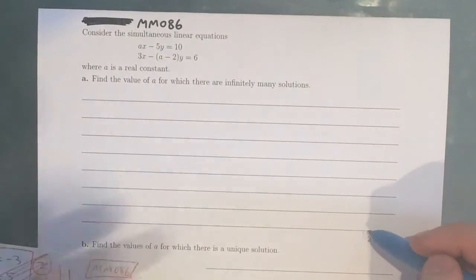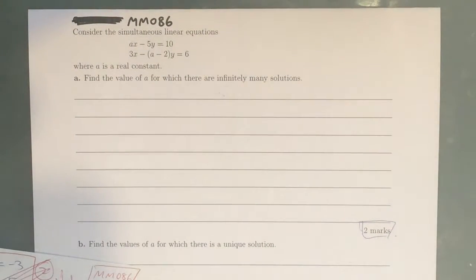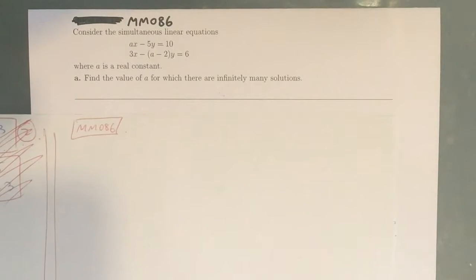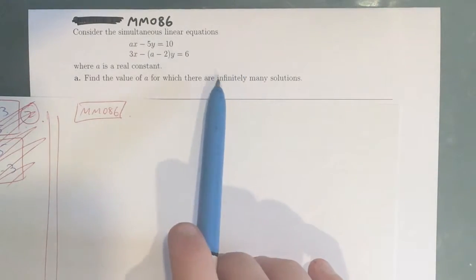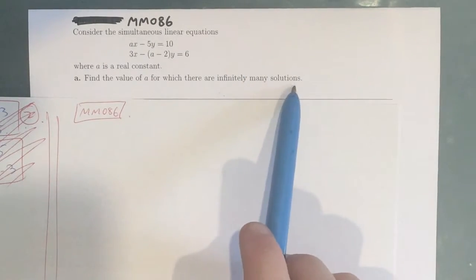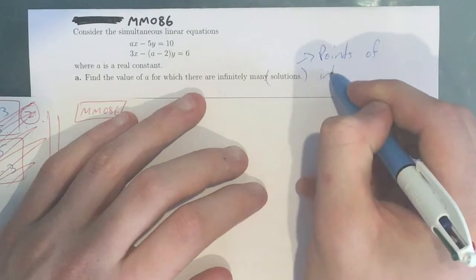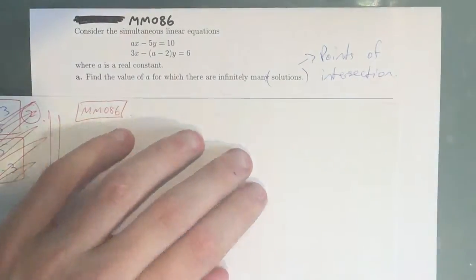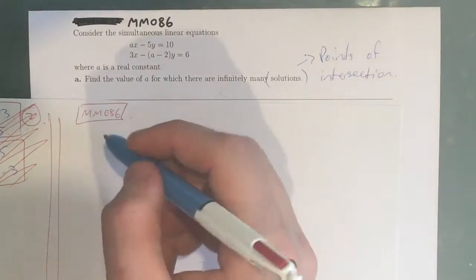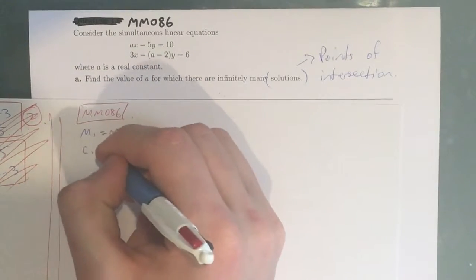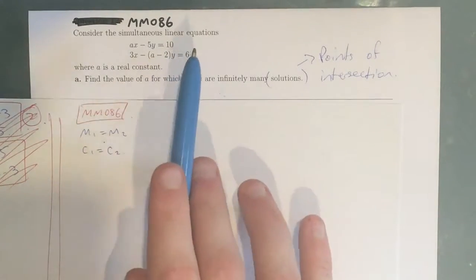So this is a 2-mark question, so we have to show some working. The way that we do that is the following. We want to find the values of A for which there are infinitely many solutions, which means infinitely many points of intersection. That means these two graphs would be exactly the same — they would have the same equation — which means M1 equals M2 and C1 equals C2. But we can only work this out if they're in the same format of Y equals MX plus C.